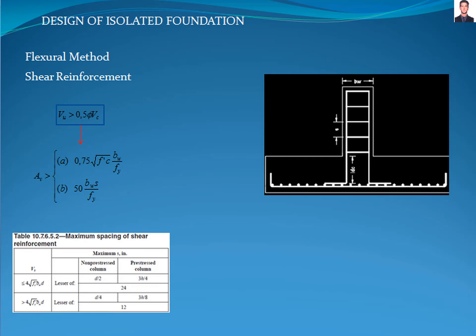The final step is to calculate the shear reinforcement required for the pedestal. First, we need to verify if shear reinforcement is required with the equations of section 10.6.2.1 of the ACI 318 standard, where Vu is the shear load, phi is the reduction factor equal to 0.75, and Vc is the nominal shear strength of the concrete. If shear reinforcement is required, the shear area is calculated with these equations, where Av is the shear area, bw is the perpendicular dimension to the shear force, and s is the separation between the shear reinforcement, calculated using table 10.7.6.5.2 of the ACI 318 standard.